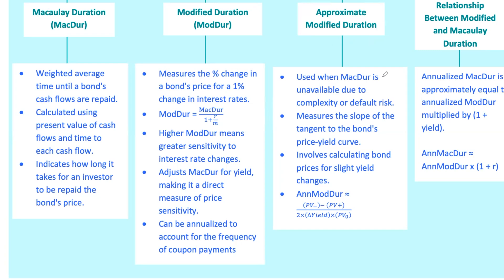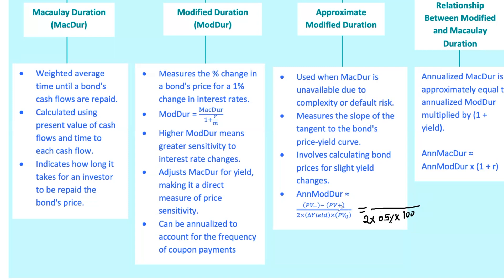What if you're dealing with a bond where calculating Macaulay duration is tricky or impractical due to complexity or default risk? Enter approximate modified duration — a handy alternative for estimating price sensitivity. This method involves calculating the bond's price for slight increases and decreases in yield and using these prices to estimate the slope of the tangent to the bond's price-yield curve. Imagine a bond priced at $100 with a yield change of 0.5%. If the price rises to $101 when the yield decreases (PV−), and falls to $99.05 when the yield increases (PV+), the approximate modified duration gives you a snapshot of the bond's sensitivity to interest rate changes.